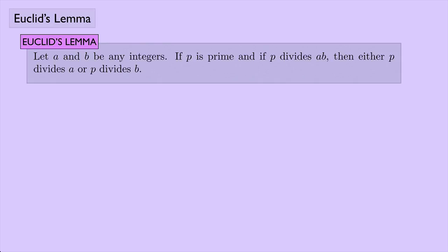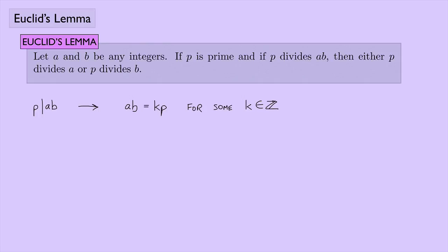How do we prove Euclid's Lemma? We know that p is prime and p divides a times b. Since p divides ab, we have ab = kp for some integer k. We also know p is prime, so the only positive divisors of p are 1 and p itself.